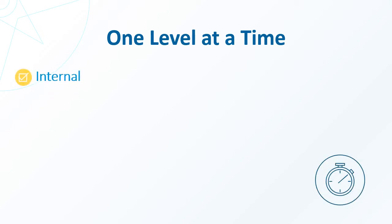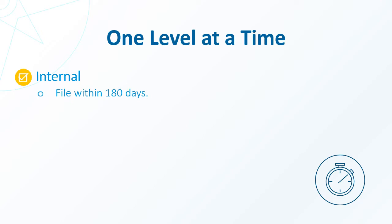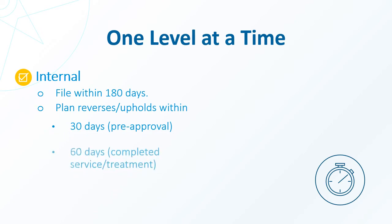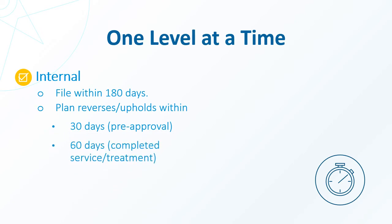Although the levels of appeals differ from plan to plan, the usual first step is an internal appeal, filed within the required time after receiving the denial letter. For most plans, this is 180 days, or about six months. This starts the formal process of your request for a full and fair review of the plan's decision. The health plan will either reverse or keep its initial ruling, and they must do this within 30 days for a pre-authorization request, within 60 days for an already completed service or treatment, and within 72 hours for an urgent case.